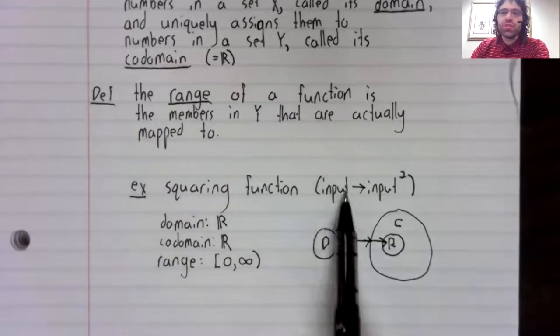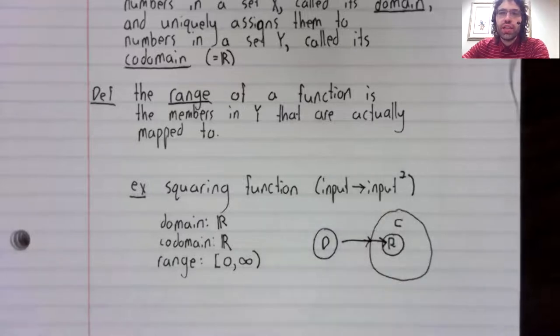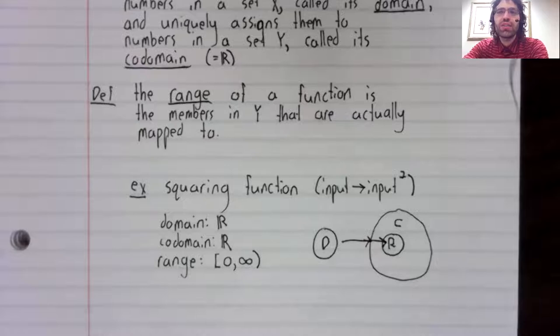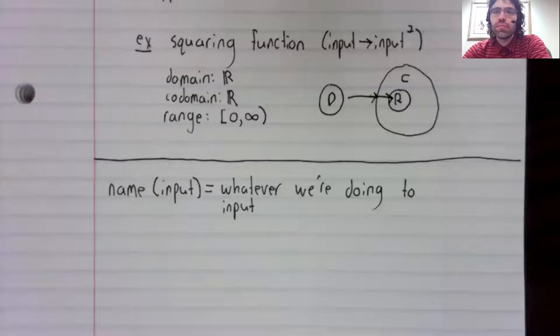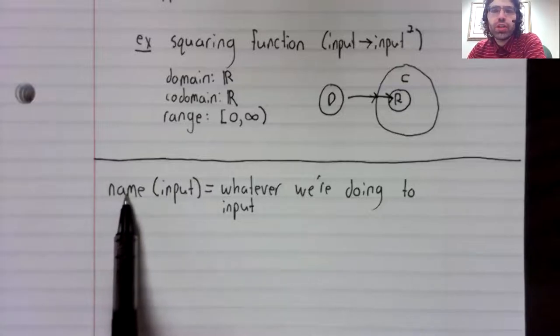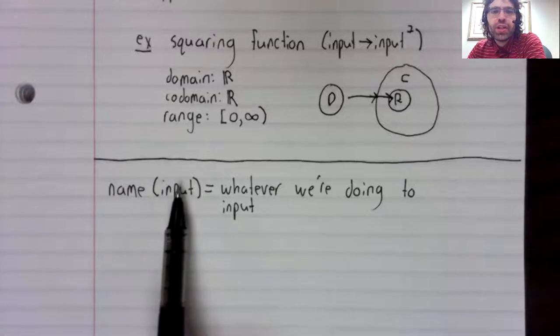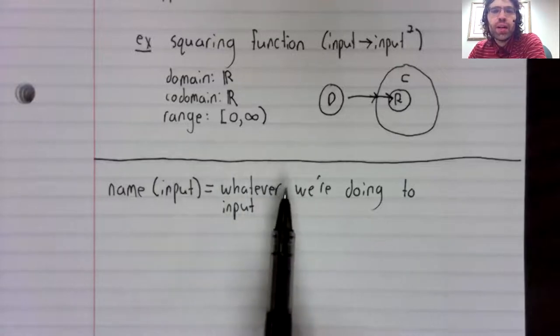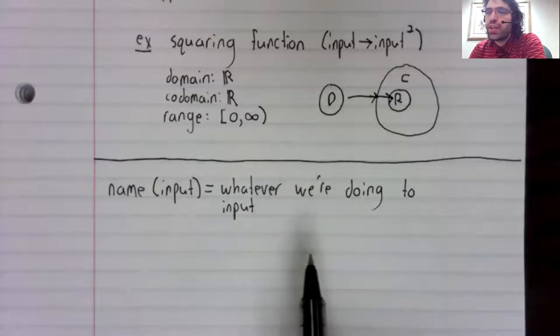This is pretty ugly notation. Let's remind ourselves of how we write functions down. Our notation is the name of the function, then the input in parentheses, then whatever we're doing to the input.